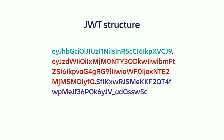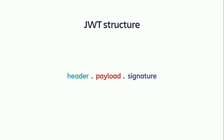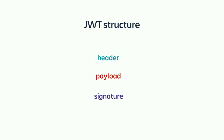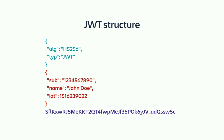A JWT is actually comprised of three portions: the header, the payload, and the signature. If we decode that Base64 data, we'll get something like a JSON blob. The header defines the algorithm, which describes how the signature is generated, and the type should always be JWT. The payload contains literally anything — it's just a JSON blob. There are a standard set of optional fields we'll cover a bit later, but you can really put anything you want in there. Finally, we have the signature, which I'll explain shortly.